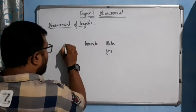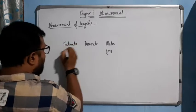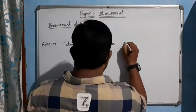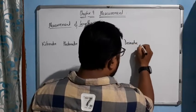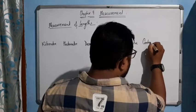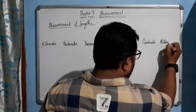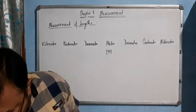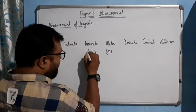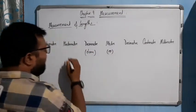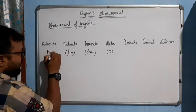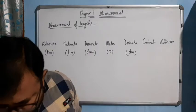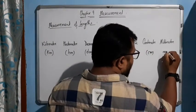The units of length are: decameter, hectometer, kilometer on the larger side; and decimeter, centimeter, and millimeter on the smaller side. Their abbreviations are: decameter — dam, hectometer — hm, kilometer — km, decimeter — dm, centimeter — cm, and millimeter — mm.